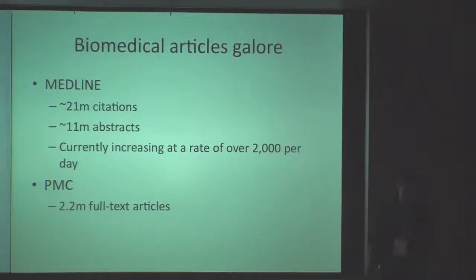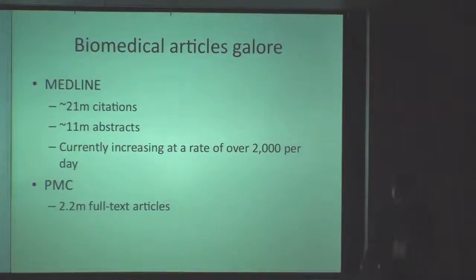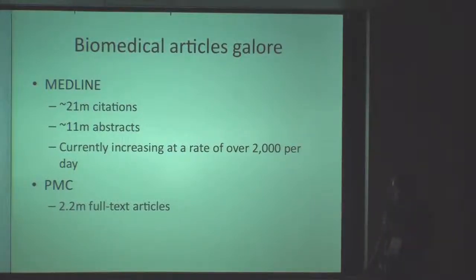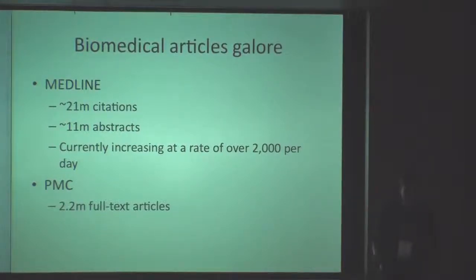We have a lot of articles, and the numbers are really quite staggering. There are 21 million citations or so in PubMed; about 11 million of those have associated abstracts, and currently that's increasing at a rate of about 2,000 per day. In PubMed Central, which contains full-text articles, we have over 2 million articles. These resources represent such a vast body of knowledge that even for limited subdomains, it becomes difficult for researchers to keep up to date and extract information.